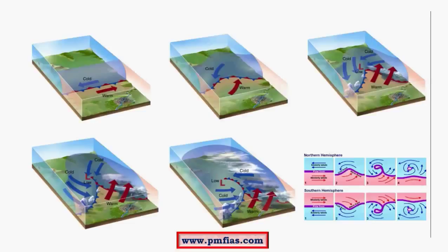Now let us look at the sequence. First we have a stationary front, then convergence begins. As convergence becomes intense, the cold air mass breaks into two regions — one which allows the warm air mass to slide over it, and the other which pushes against the warm air mass. So we have two cold air masses and one warm air mass in the occluded front type.